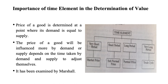The importance of the time element in price determination was given by Marshall. In a very short period, the price determined is called market price. In the short period, it is called subnormal price. In the long period, it is called normal price. In a very long period, it is known as the trade cycle. So, in the short run, demand totally influences price, and in the long run, supply totally influences price.